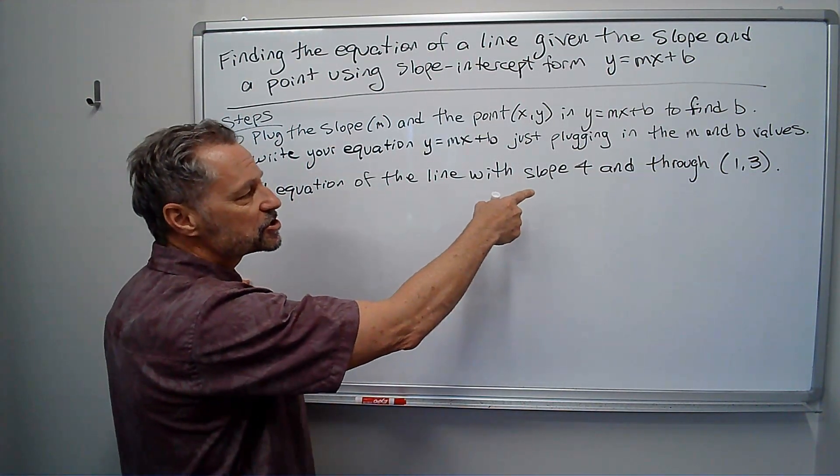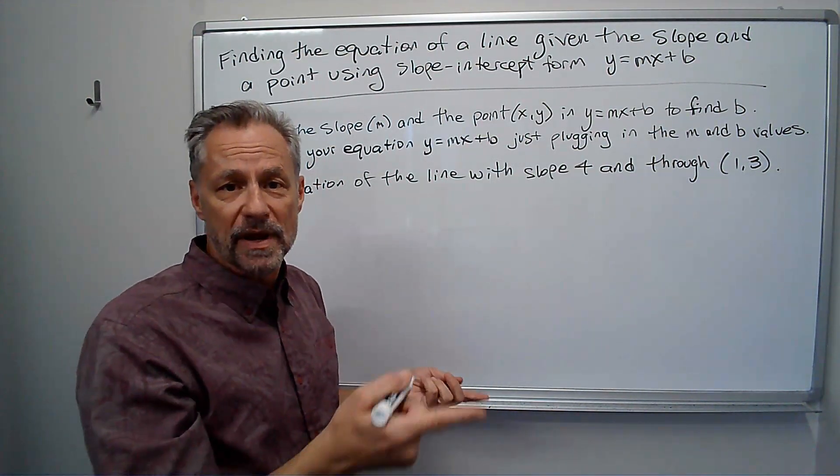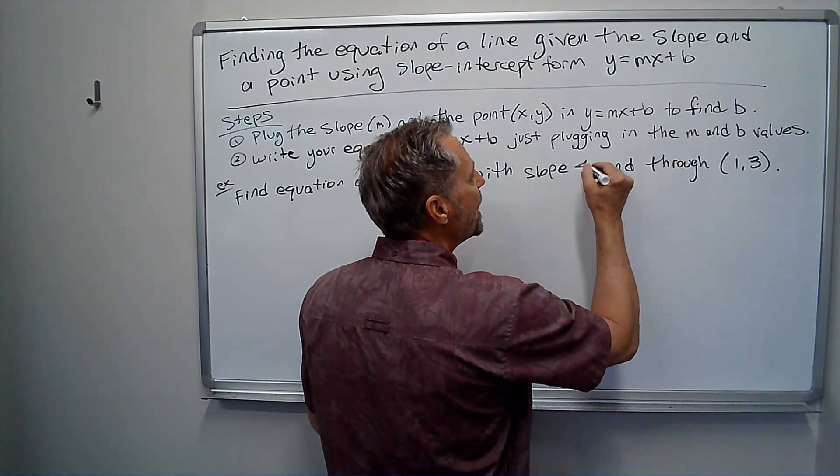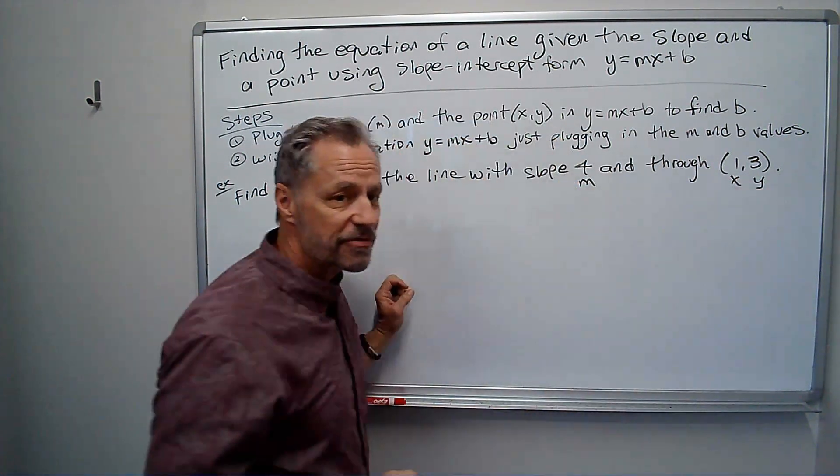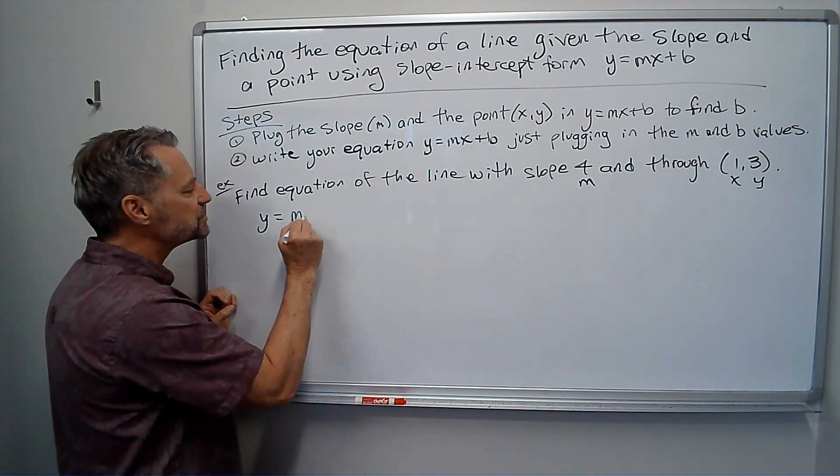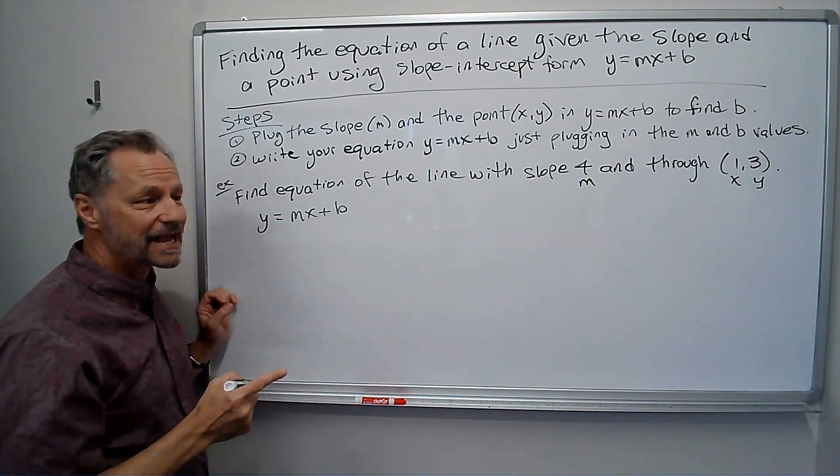Find the equation of a line with slope 4 and through the point (1, 3). So I know m is 4, I know I have an x value of 1 and a y value of 3. So I go straight to my equation, y equals mx plus b, and I plug in everything I have.